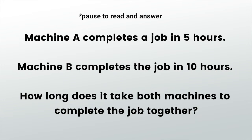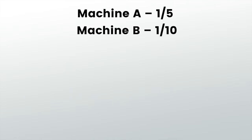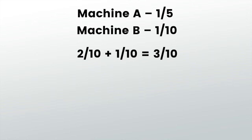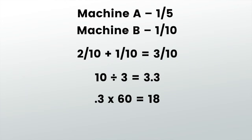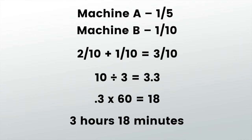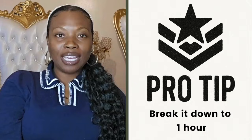Pause the video and try this one on your own. Machine A finishes one-fifth of the job per hour and machine B finishes one-tenth. Add them together — that's three-tenths of the job done in one hour. Flip it to divide 10 by 3 and you get 3.3 hours. And 0.3 hours is 18 minutes. If you didn't get 3 hours and 18 minutes, go back and try those steps again. Pro tip: always break it down to how much gets done in one hour, then ask how many hours to finish the whole job.